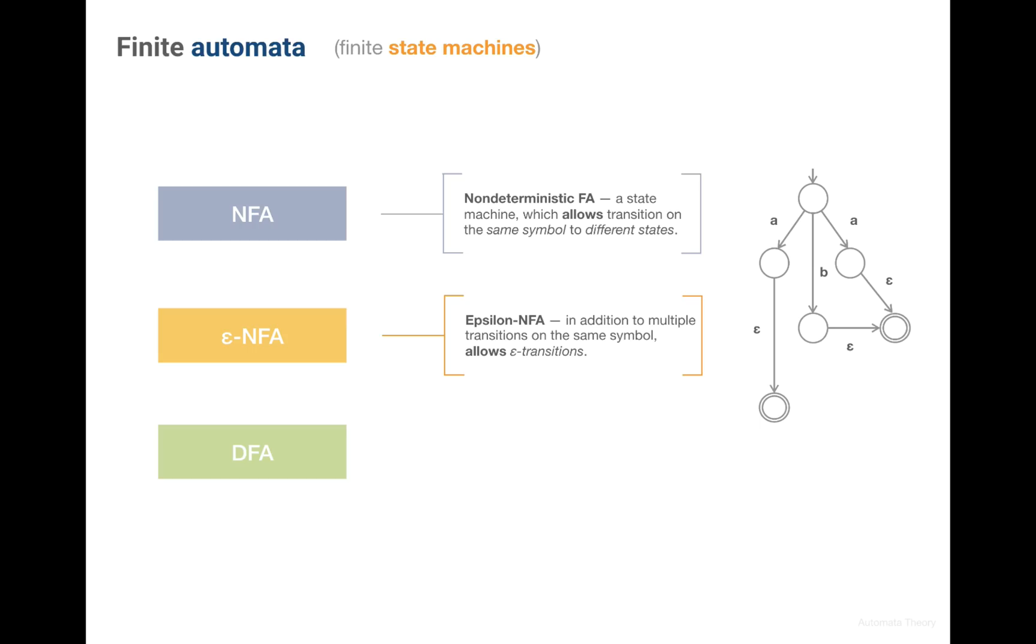In addition, it also allows Epsilon transitions. So this machine is even less restrictive than the NFA. Now what is the Epsilon transition? Such transitions allow us to go from one state to another without consuming any character from a string.